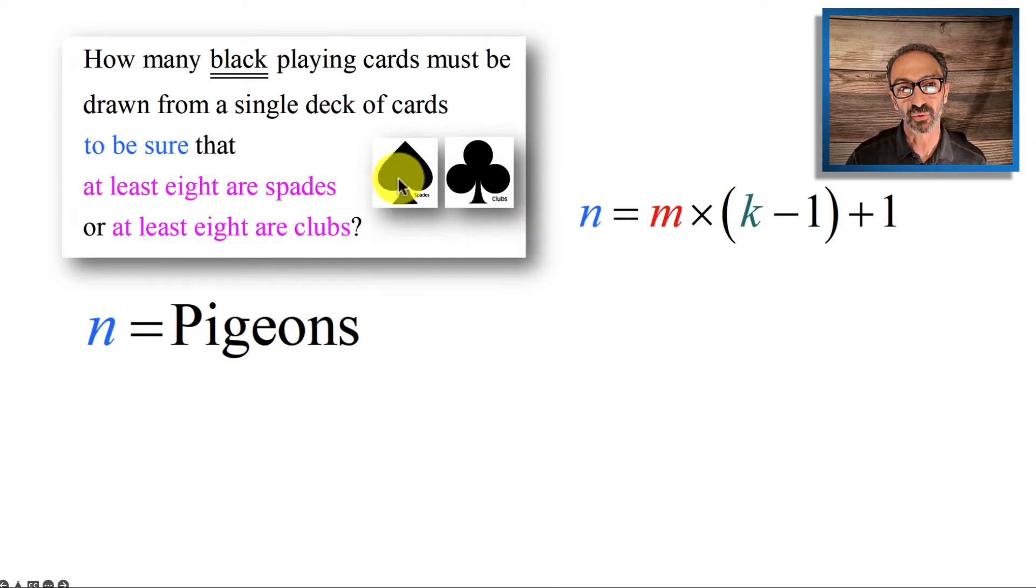We already have two holes, that's m. So m is holes, which is either this hole or this hole. This hole will be filled with at least eight or this hole will be filled with at least eight, so m is two.